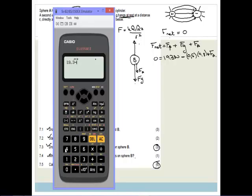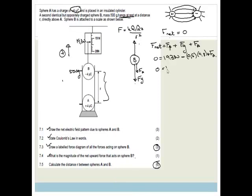So let's pop it in our calculator. So we've got 19.3 minus 4.9, which gives us 14.4. So 0 is equal to 14.4 Newtons, plus F_A. So F_A, the force due to A, is going to be minus 14.4 Newtons.